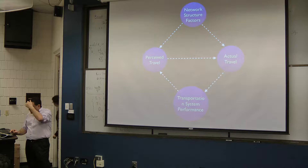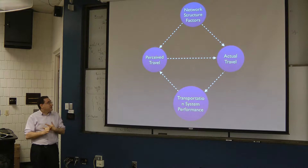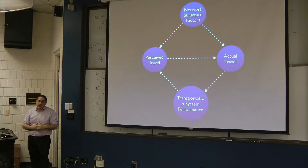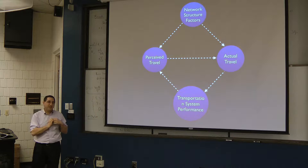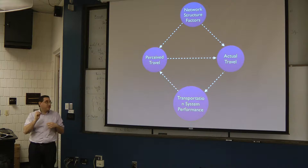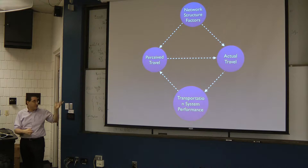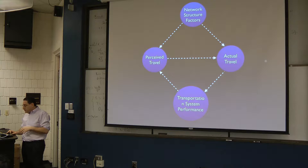Network structure affects actual travel — how efficiently you can move on the network — but it also affects your perceptions of travel, how you think about the network. When we ask someone how long it took to get from home to work, they'll give an answer based on their perception of that travel time, which may differ from the actual travel time. That perception affects actual travel behavior, which in turn affects transportation system performance — congestion, accessibility — and both then affect perceived travel. This is a highly intertwined system.